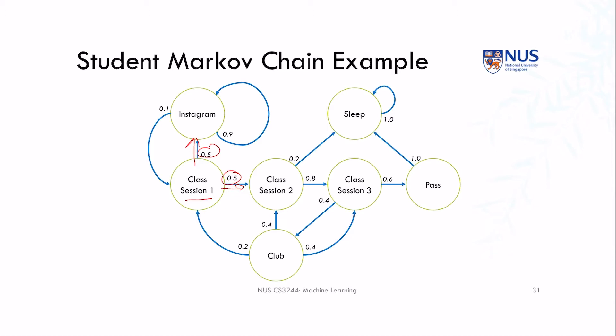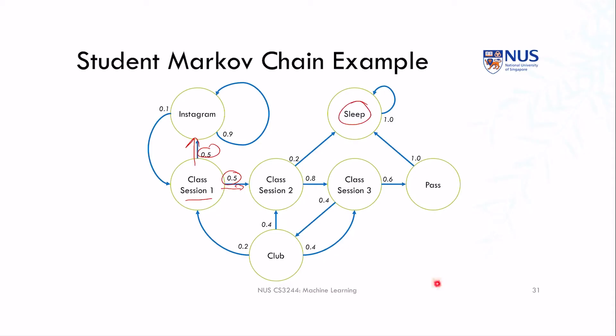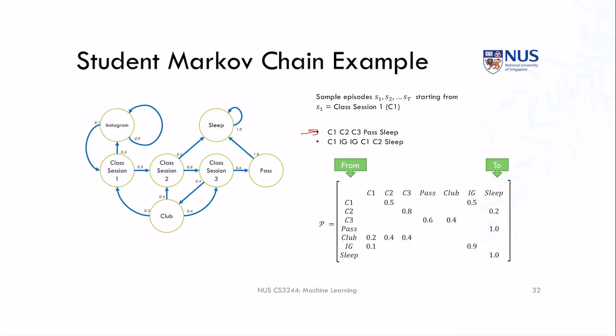States can have any number of transitions, including a transition just to itself — meaning you stay in that state all the time. For example, when you sleep, you might end up in that state for the rest of the example. In other cases you can transition out. Many of the states have two possibilities, but there's at least one — going to the club — where three different things can happen: you might have forgotten what you learned in class sessions one, two, and three, and have to start all over. You could start at class session one and proceed through class session two, class session three, pass the course, and finally sleep.